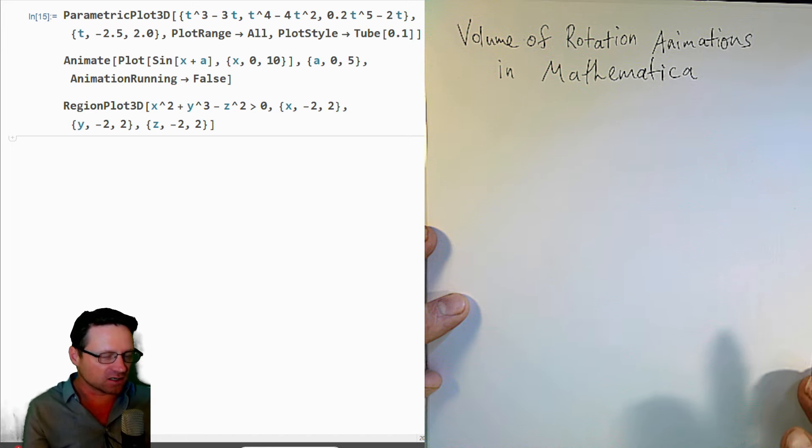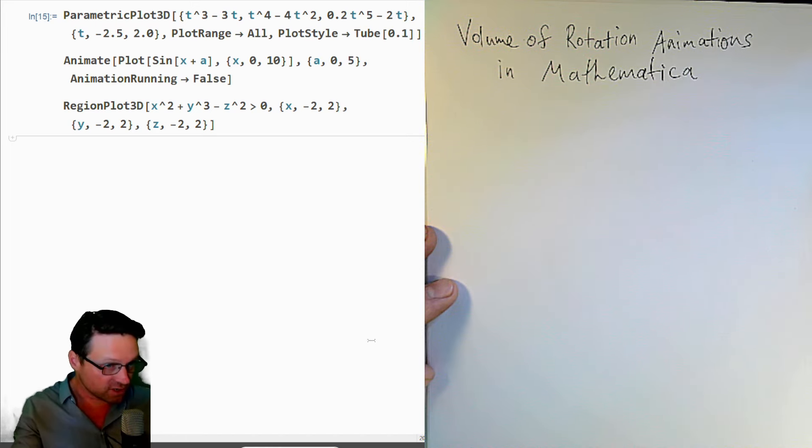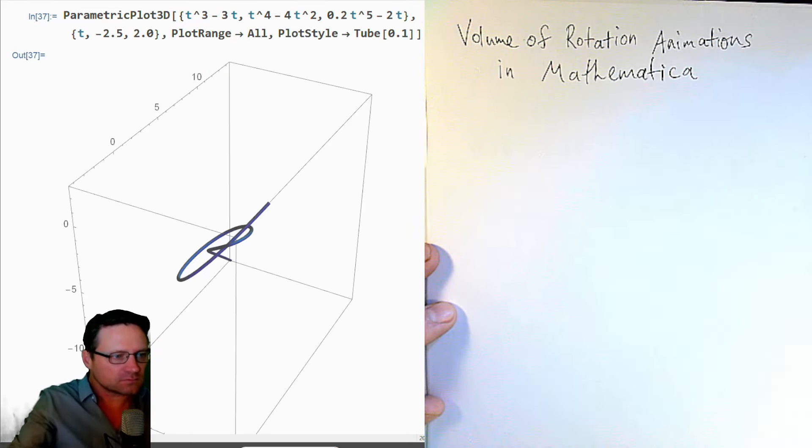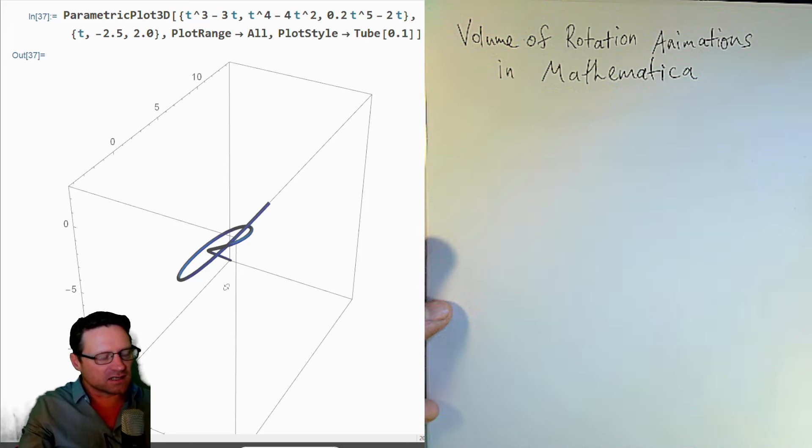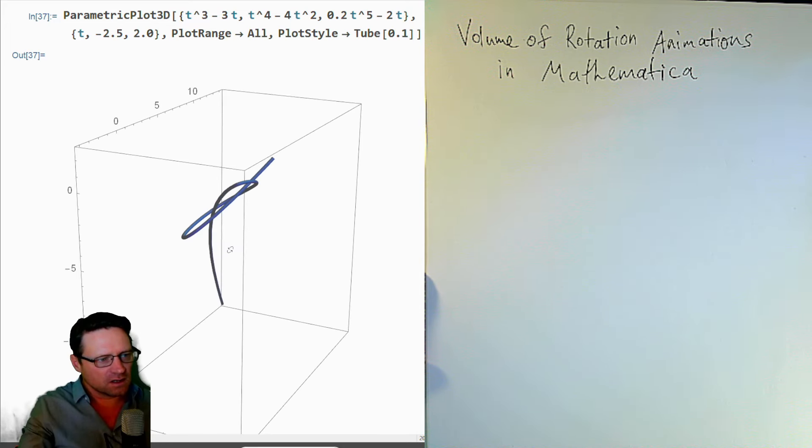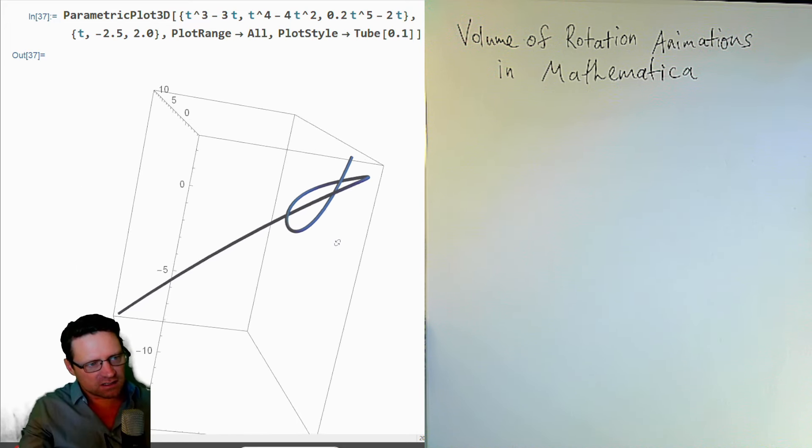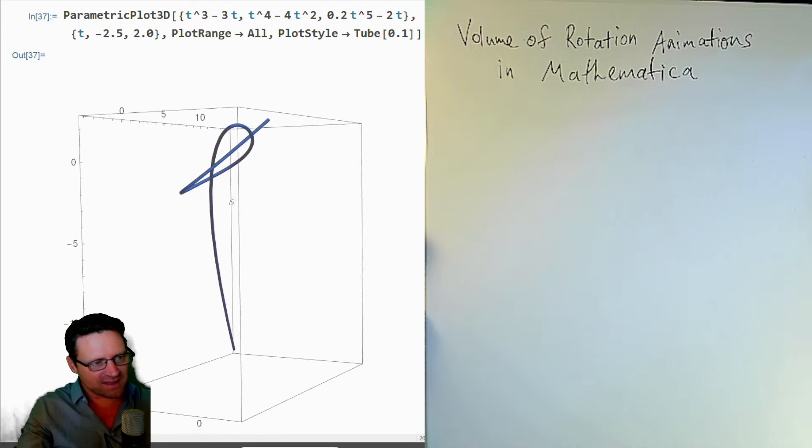Okay, so let's get started. What I have copied out of the help file are three commands for plotting things. The first one is parametric plot 3D. Let's just run this. You can see it makes kind of a knot. I've given it thickness for the purpose of 3D printing that knot.